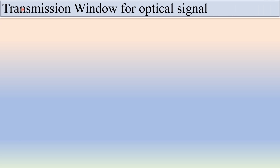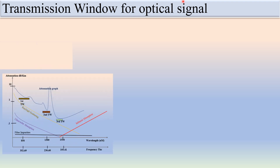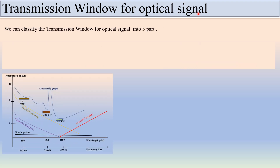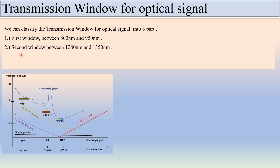Hello friends. In today's video we are going to discuss different transmission windows for optical signals. We can classify the transmission window for optical signals into three parts. The first window lies between 800 nanometers to 950 nanometers. The second window lies between 1280 nanometers to 1350 nanometers. The third window lies between 1510 nanometers to 1600 nanometers.